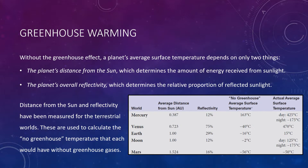Venus is the extreme case, with a greenhouse effect that bakes its surface to a temperature more than 500 degrees Celsius warmer than it would be otherwise. Without the greenhouse effect, our planet's global average temperature would be a chilly negative 16 degrees Celsius, or 3 degrees Fahrenheit — well below the freezing point of water. With it, the global average temperature is about 59 degrees Fahrenheit or 15 degrees Celsius, which is 31 degrees Celsius warmer. The greenhouse effect is clearly the difference between not having any liquid water and having it today.